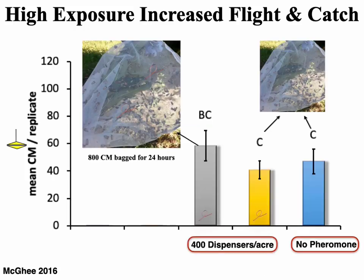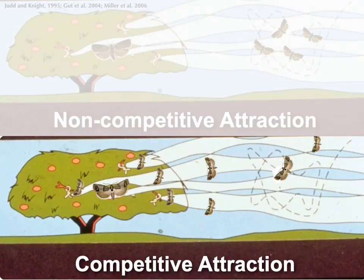He also did the same experiment with hand-applied dispensers. Four 10-acre blocks were treated with hand-applied dispensers at 400 per acre, and four untreated blocks served as controls. In one dispenser treatment, he placed two hand-applied dispensers inside the bags with the codling moths for very high exposure. Upon releasing all moths into untreated orchards, the results confirmed that exposure to higher concentrations of pheromone — whether aerosol or hand-applied — stimulated flight, searching behavior, and trap captures. This is an example of competitive attraction: exposure to high pheromone concentrations turns codling moths into super searchers.